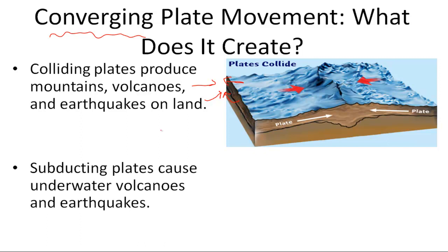Subducting plates are another type of converging plates. Subducting plates happen when one plate goes under the other, and these cause underwater volcanoes and earthquakes.